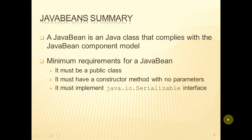There's a set of minimum requirements and a set of optional requirements. And so as far as Java is concerned, a Java Bean is a Java class, just an ordinary plain old Java class that complies with the Java Bean component model.